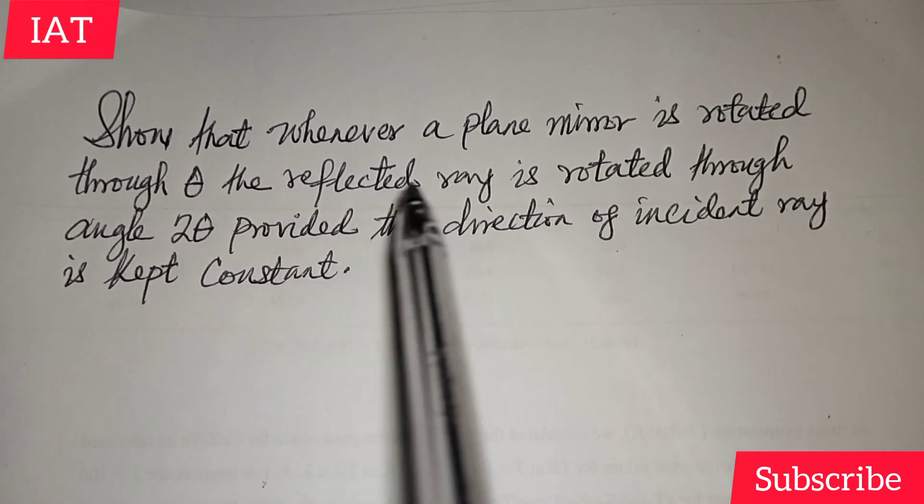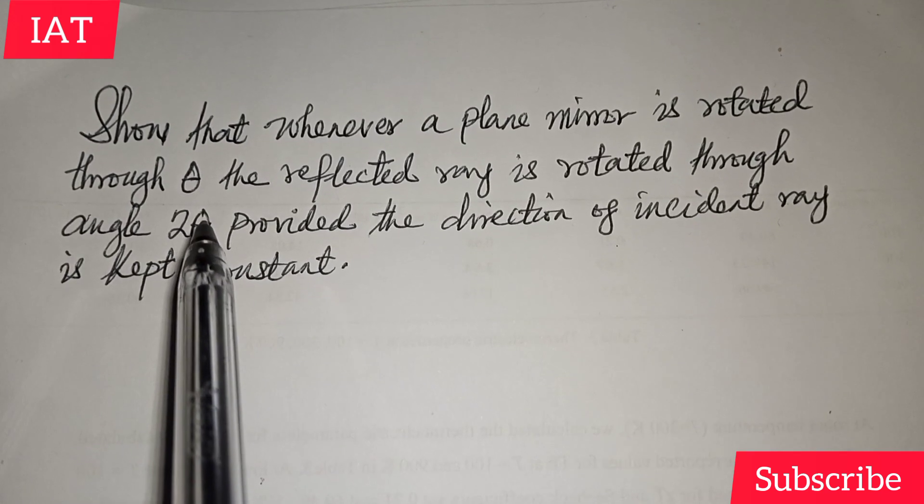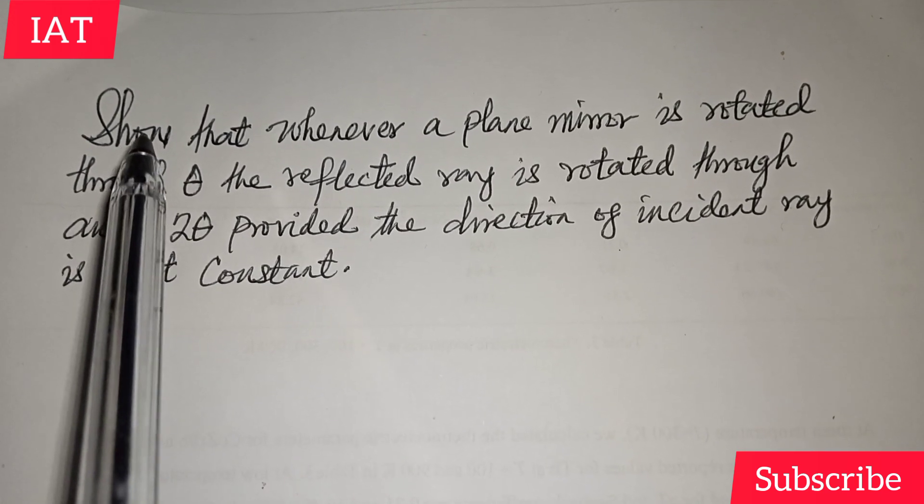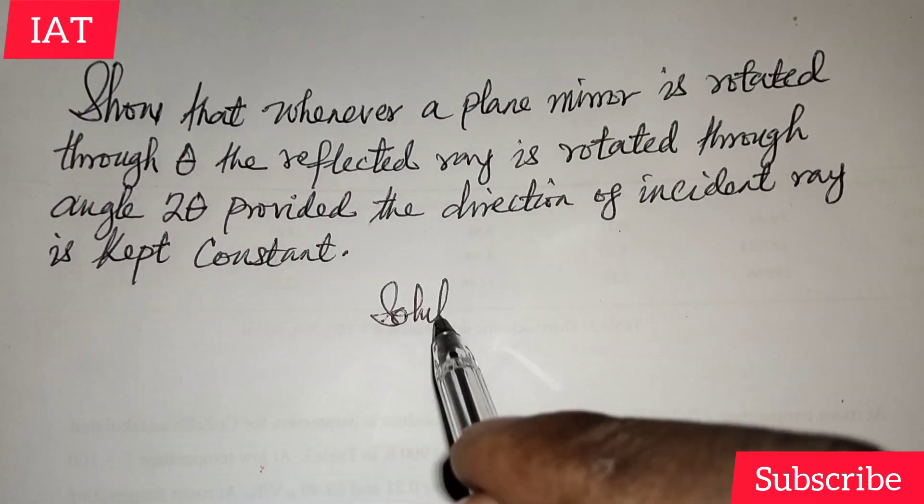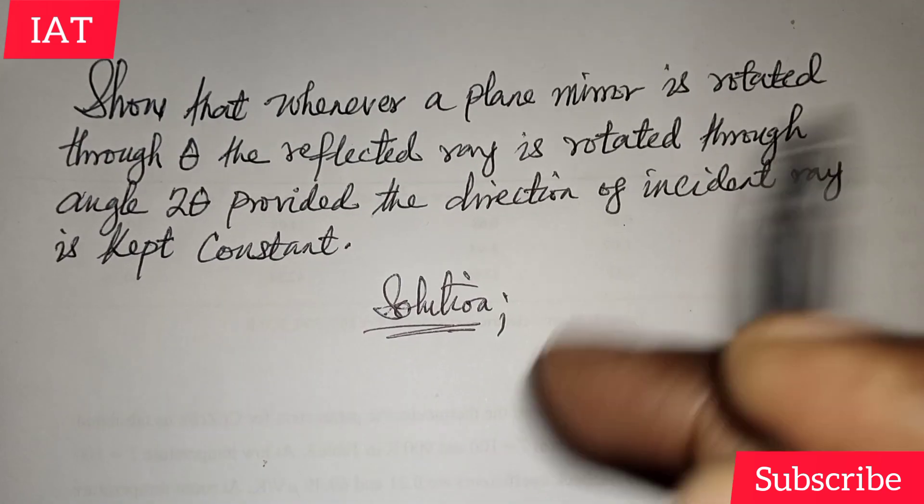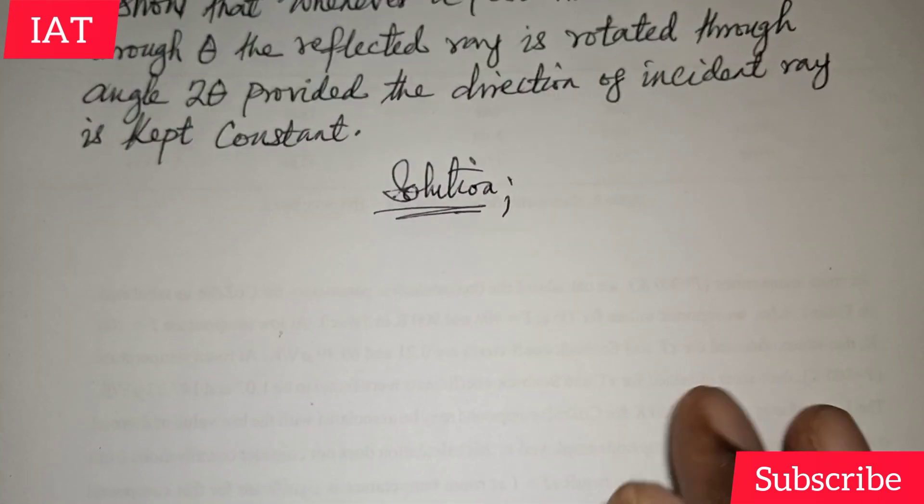So we want to see by the time you rotate this mirror if it will give this 2θ. That's exactly what we want to derive. Alright, so what we need to do first is to have a schematic representation of this information.